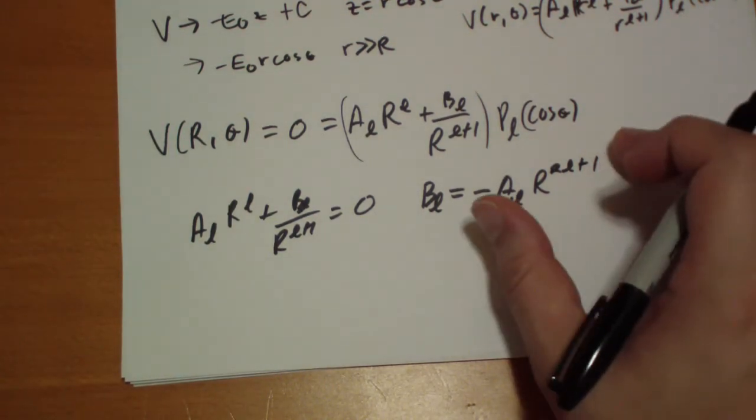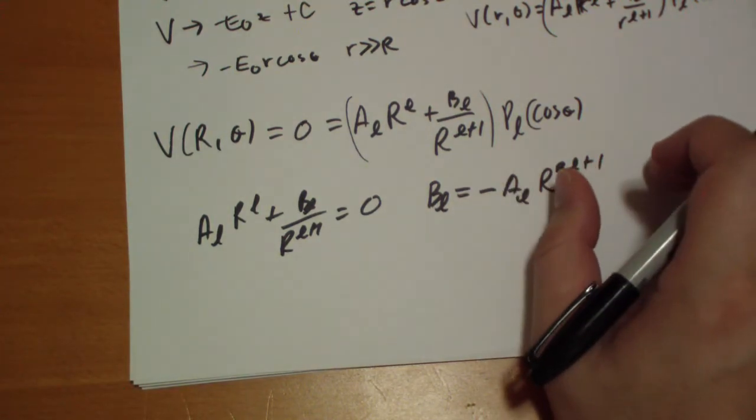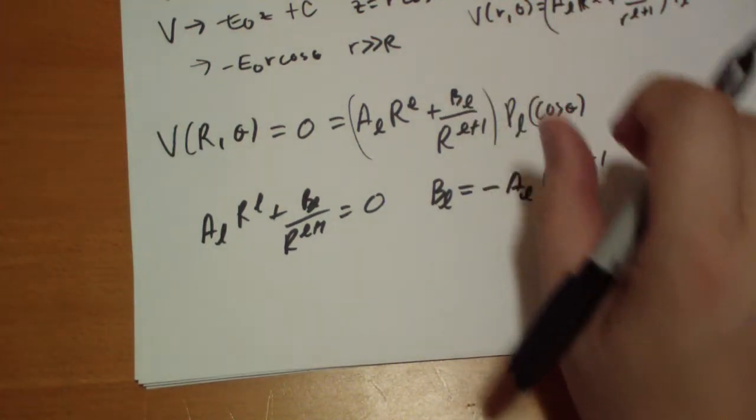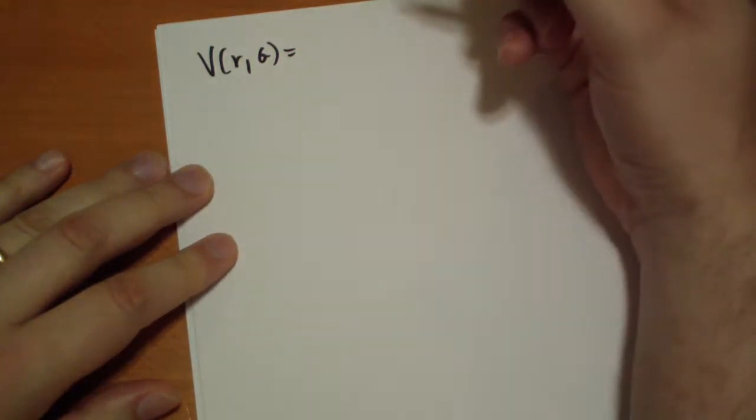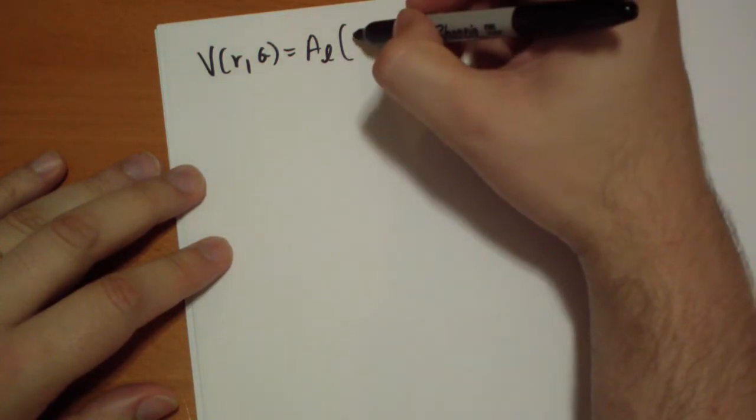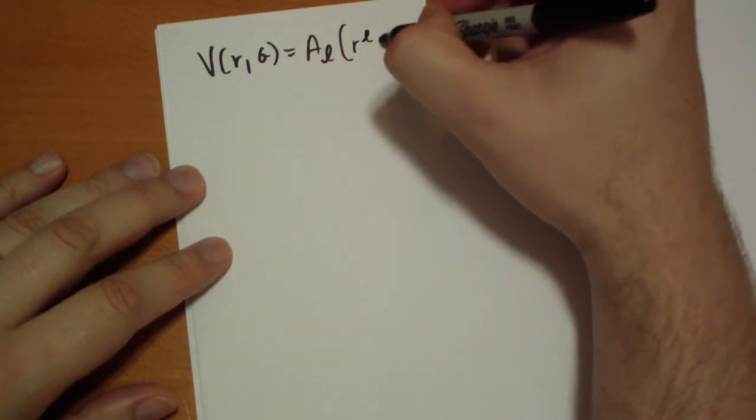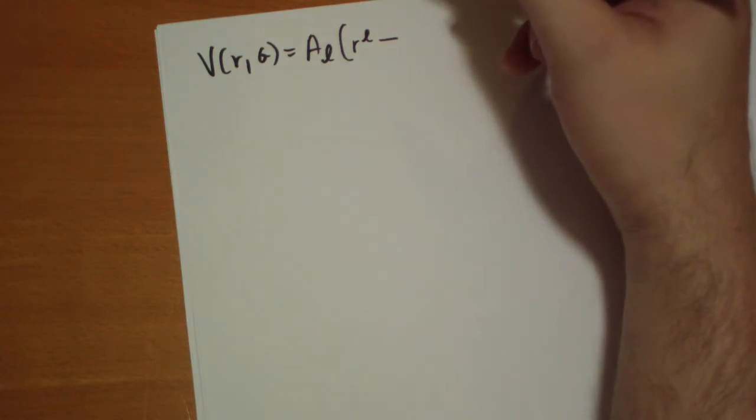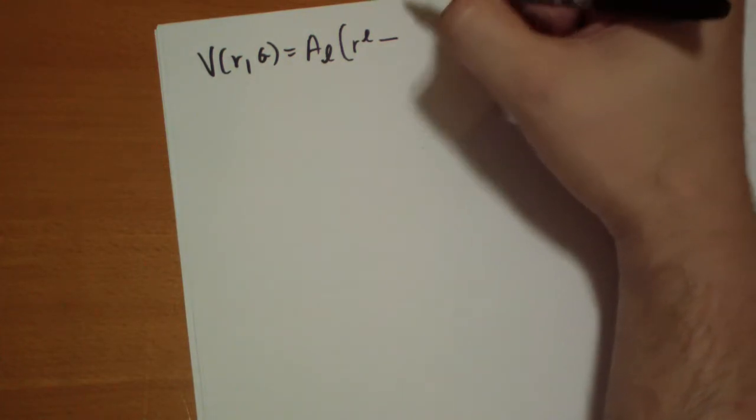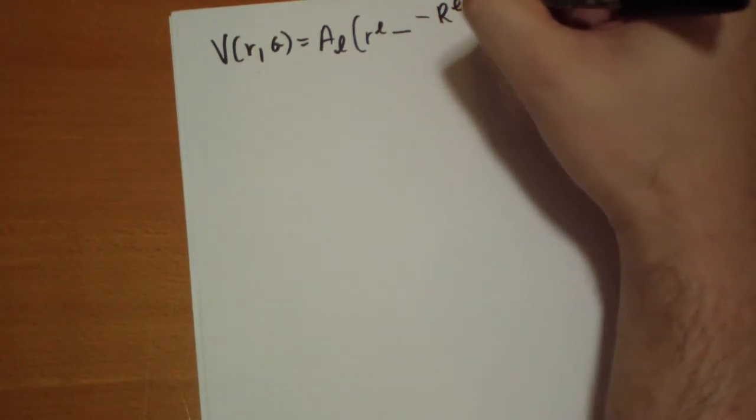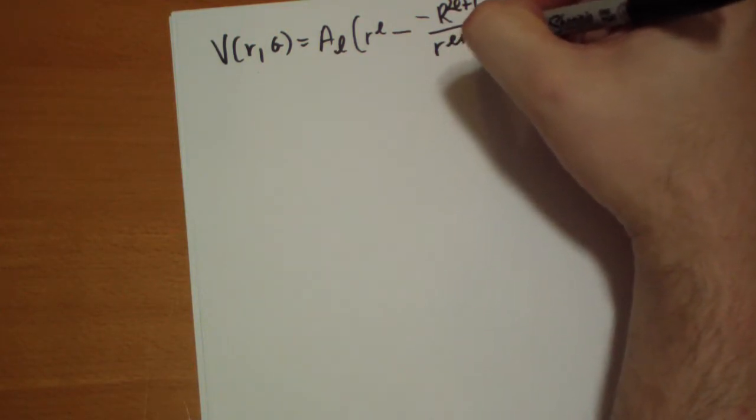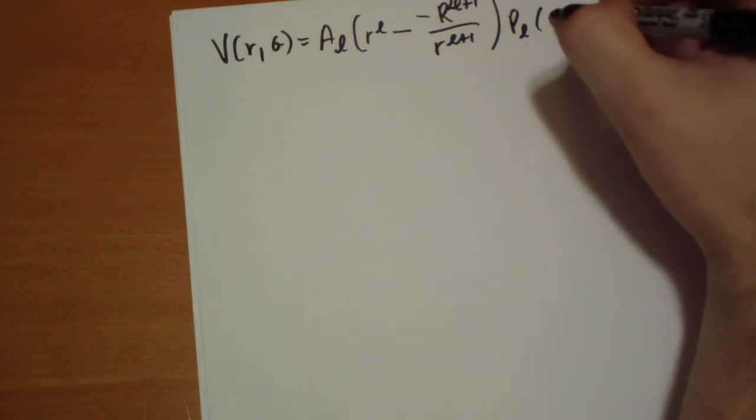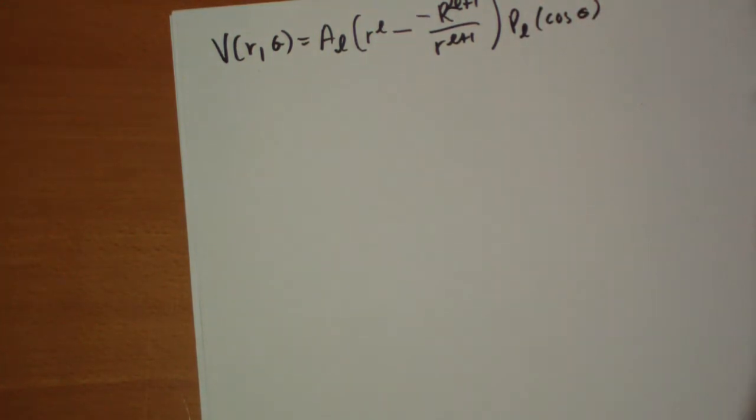Since that's the case, we can substitute B_L. When we substitute that in, we can take out the A_L. So we have R to the L minus our B_L, which is negative R^(2L+1) over R^(L+1), times P_L cos theta.